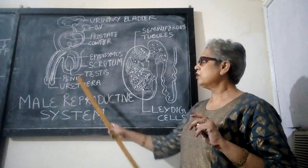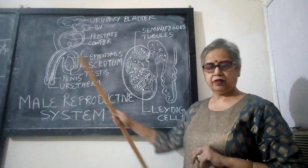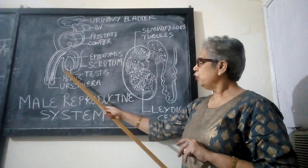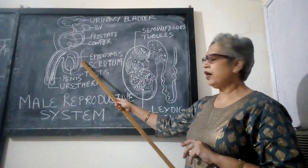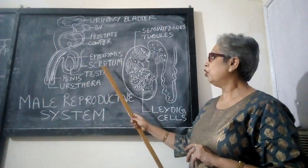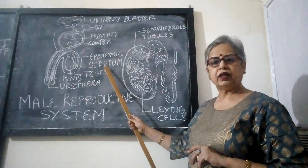The primary parts are a pair of testes, which are enclosed in a bag or pouch-like structure called the scrotum or scrotal sac.